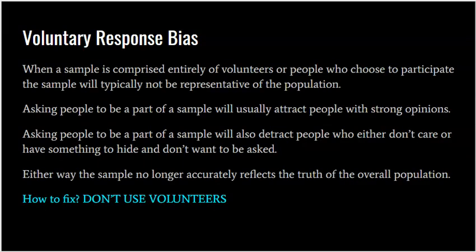Voluntary response bias is when you use volunteers to make up your entire sample. These types of samples will not represent the population. Asking people to be a part of a sample will usually attract people with strong opinions, and will detract people who either don't care or have something to hide. If you select your sample simply by asking for volunteers, you're going to get data that's usually strongly for or strongly against, and the sample no longer accurately reflects the truth of the overall population. The fix: don't use volunteers — it needs to be a random selection.